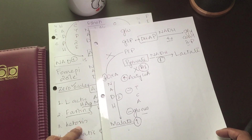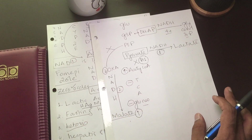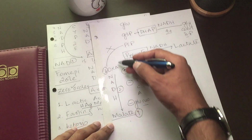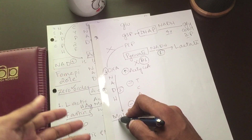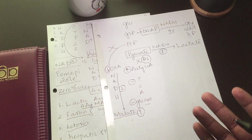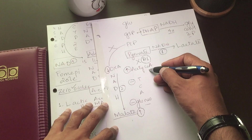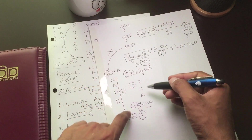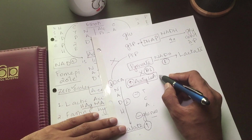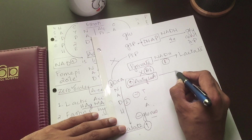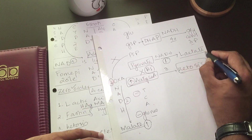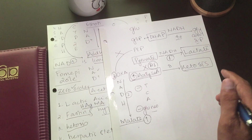Before hepatic steatosis, let's discuss how ketosis occurs. Ketone bodies are formed during prolonged starvation or prolonged fasting hypoglycemia. The body shifts from gluconeogenesis to ketone production. Acetyl-CoA, which is normally used in the TCA cycle, now accumulates, and increased acetyl-CoA is shifted toward ketogenesis.